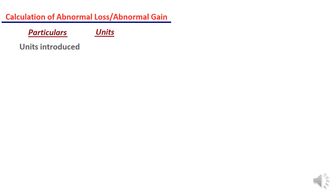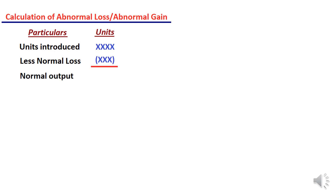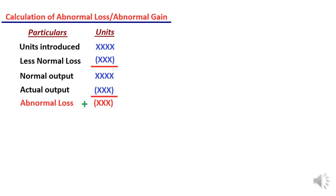Now we will understand the calculation of abnormal loss or abnormal gain. First, take units introduced minus normal loss (already anticipated) — the result is normal output. From normal output, deduct actual output given in the question. If the resultant figure is positive, that is abnormal loss; if it is negative, that is abnormal gain.